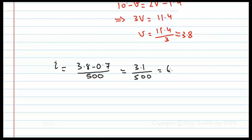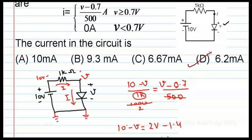This is equal to 6.2 milliampere. So, the current through the circuit is 6.2 milliampere. So, D is the option.